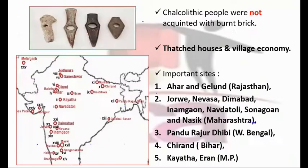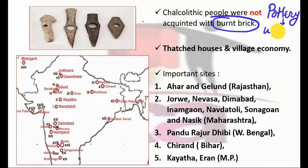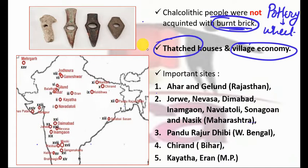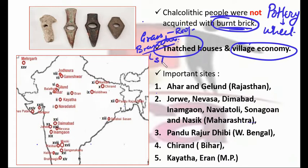The Chalcolithic people were not acquainted with burnt bricks — you should keep this point in mind. Though they were skilled in making pottery on the wheel, they did not know the technique of firing bricks. They generally lived in thatched houses, and it was a village economy. The thatched houses were made up of grass, tree branches, and crop remnants. The roof was made of grass and branches for support and strength.